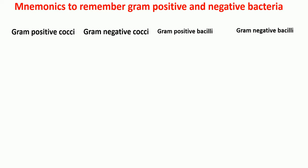Hello everyone! In this lecture today I'm going to discuss the mnemonics to remember gram-positive and gram-negative bacteria. I'm going to first talk about how to remember gram-positive cocci, then gram-negative cocci, gram-positive bacilli, and gram-negative bacilli. There are so many bacteria that it's really hard to know which one is gram-positive and which one is gram-negative, so I'll discuss mnemonics to understand that.